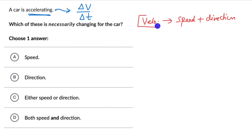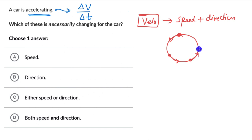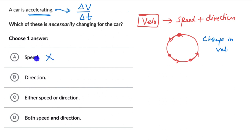For an object's velocity to change, either the speed can change or the direction can change. Think about an object moving with constant speed in a circle — the magnitude of velocity is not changing, but the direction is constantly changing. So there is still a change in velocity, and there will be acceleration. Option A (speed is changing) is not necessarily right, because only the direction can change and there will still be acceleration.